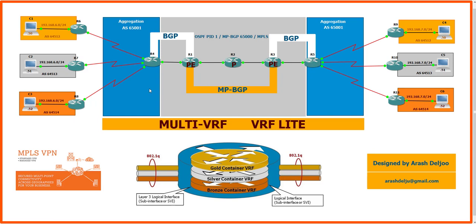We need to connect our customers to the aggregation layer routers. For example, R6, R7, and R8 are connected to R4. Another site of this company — assume this is customer A site 1 and customer A site 2 — is connected to R5. R10 and R11 are connected to R5. This is the aggregation layer for both sites.